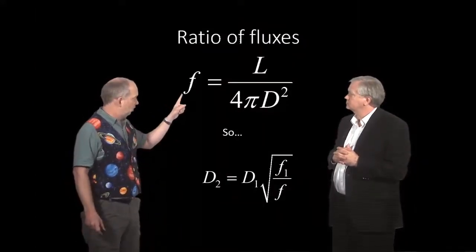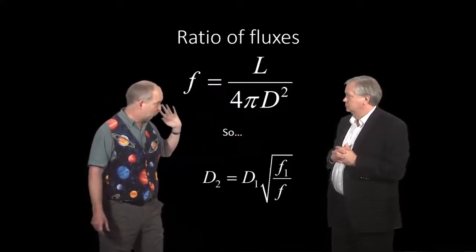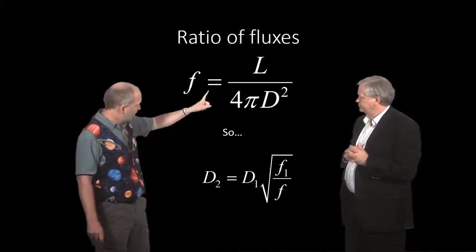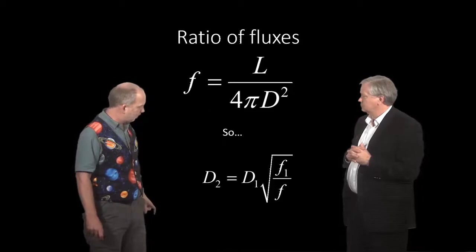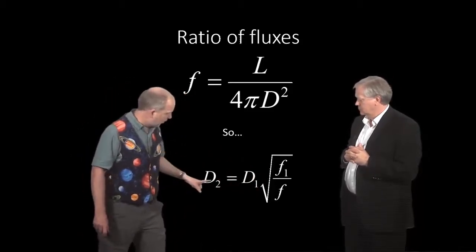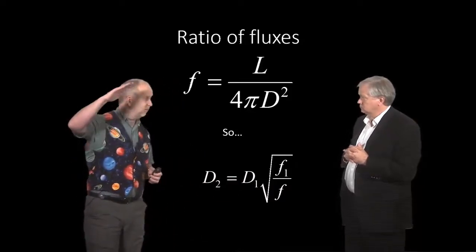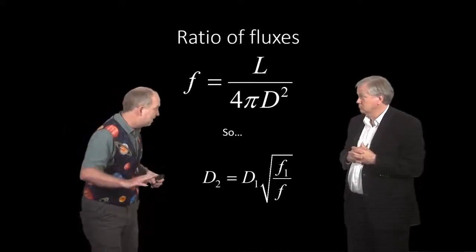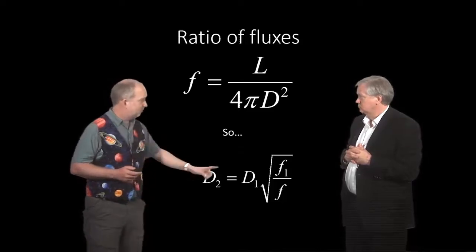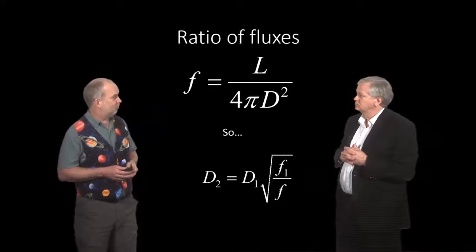Now we know that the flux we observe is going to be luminosity divided by 4 pi d squared. That's the inverse square law. We covered that in great depth in the first course in the series and we've hit it again repeatedly all the way through. Now if you rearrange this, it means if you have two objects, we can have the ratio of the fluxes. The square root of that gives you the ratio of the distances. So if we can look at the main sequence in the Hyades and the main sequence which will appear much fainter in the Large Magellanic Cloud, because it's much further away, the ratio of the two gives us the ratio of the distances. Yep. So we can look at how far away the Magellanic Clouds are. Easy.